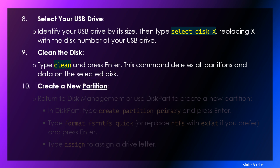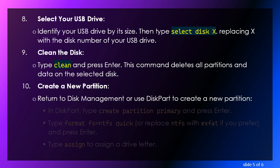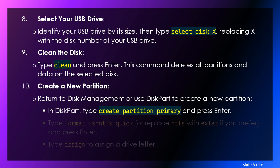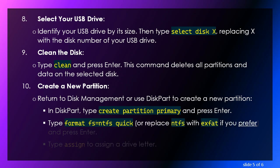Create a new partition. Return to Disk Management or use DiskPart to create a new partition. In DiskPart, type 'create partition primary' and press Enter. Type 'format fs=NTFS quick' — or replace NTFS with exFAT if you prefer — and press Enter. Then type 'assign' to assign a drive letter.